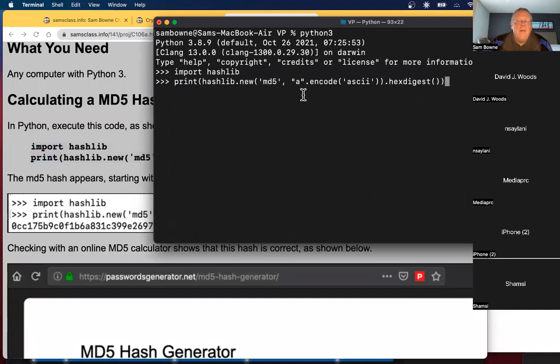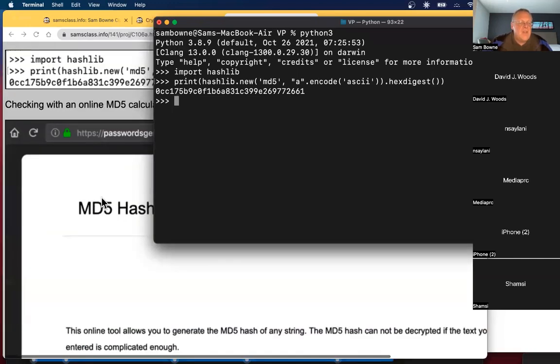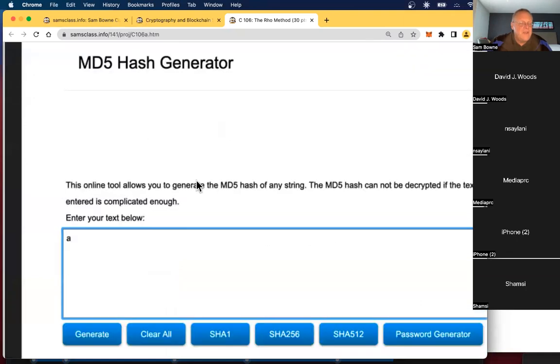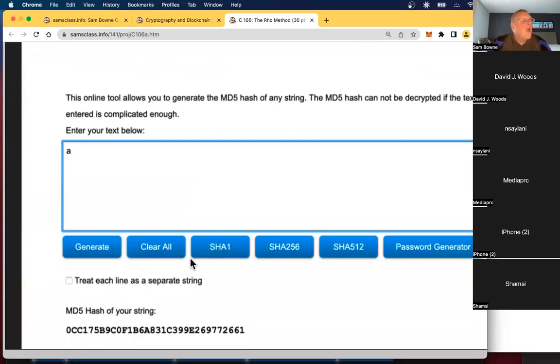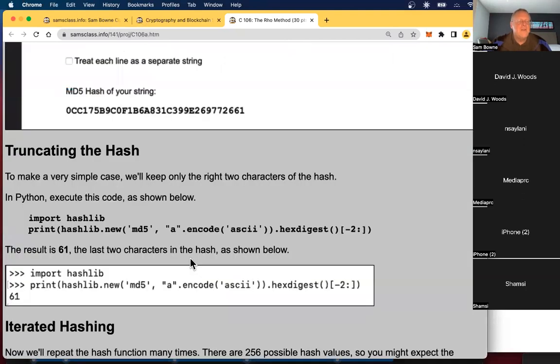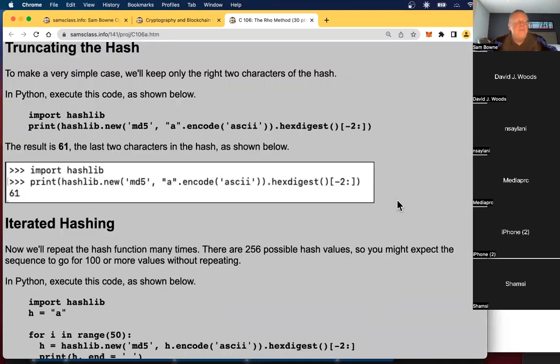I'm going to take A, encode it as ASCII and do the hex digest. So it's going to do MD5 of A, the letter A, which is CC17 and so on. And you can check it with an online calculator just to see if it's right. And A does hash to CC17. Now, if we did MD5 hashes, it would be 2 to the 64 calculations to get to the tail and that would take too long. So we're going to truncate it to make it really short, just two hexadecimal characters.